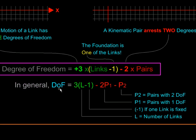Degree of freedom of a mechanism is equal to three times the number of links minus one, minus two times the number of pairs with one degree of freedom, minus the total number of pairs with two degrees of freedom. This is called Grubler's criteria.